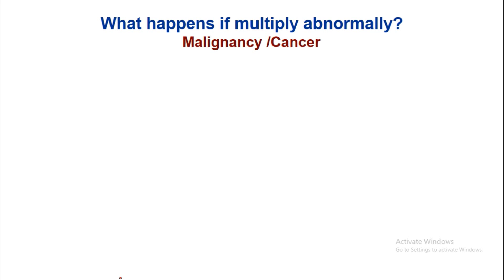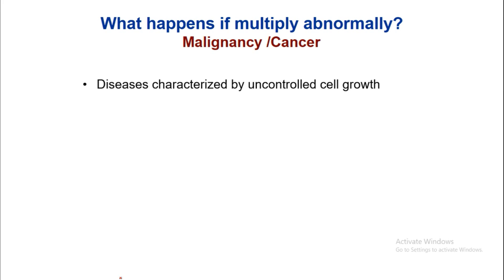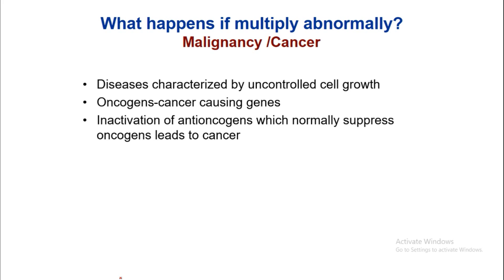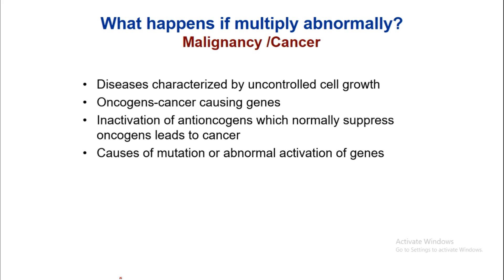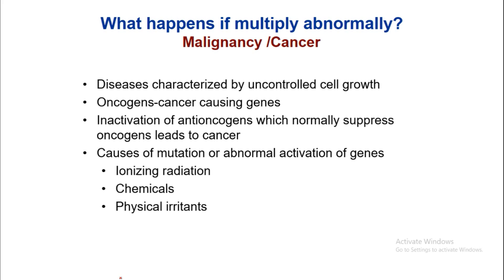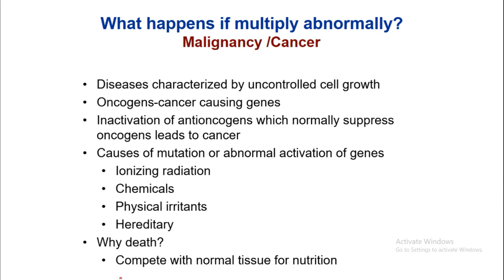What happens if cells multiply abnormally? This condition is known as malignancy or cancer — a disease characterized by uncontrolled cell growth. Oncogenes are cancer-causing genes; inactivation of anti-oncogenes, which normally suppress oncogenes, leads to cancer. Causes include mutation or abnormal activation of genes due to ionizing radiation, chemicals, and physical irritants. Cancer cells compete with normal tissue for nutrition.